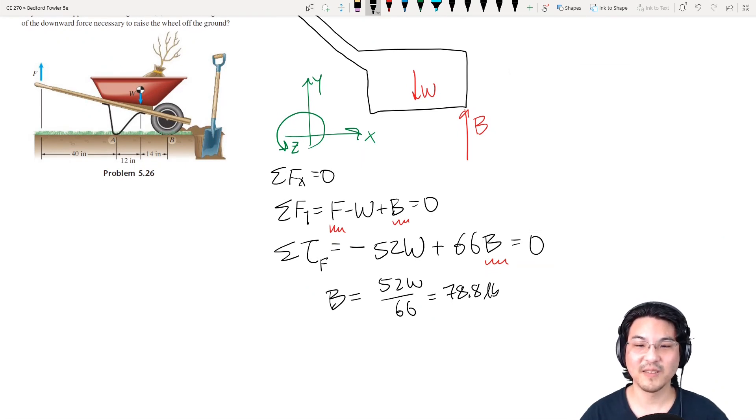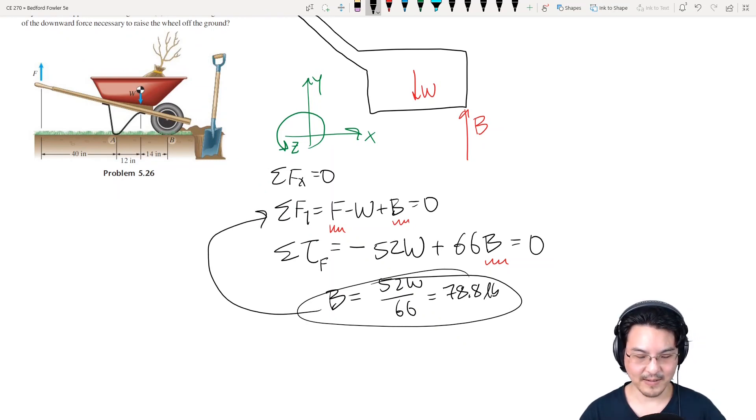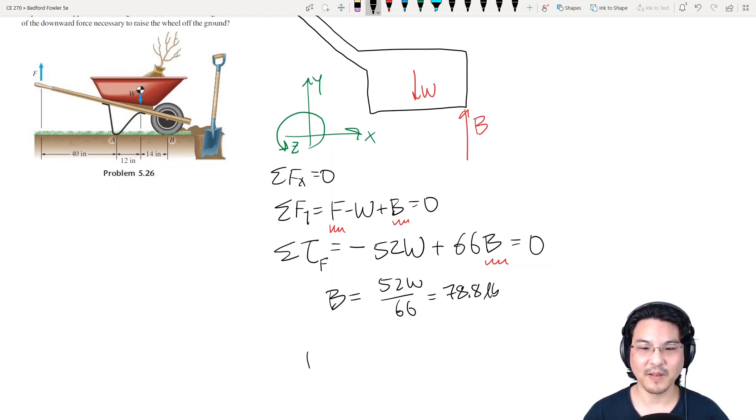Okay, so to solve for the force, we'll substitute this number back into this equation. So F is W minus B. So 100 minus 78.8 is 21.2.